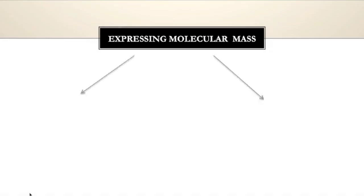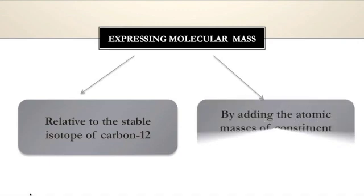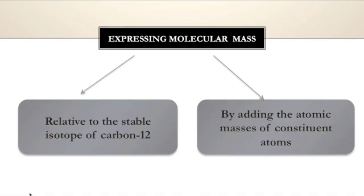There are two ways to express the molecular mass. The first way is the relative molecular mass, which is calculated relative to a stable isotope of carbon-12. The second way is by adding the atomic masses of the constituent atoms. Scientists have already calculated the relative atomic masses, and all of them are listed in the periodic table, so we can take those atomic masses and add them together to get the mass of the molecule.